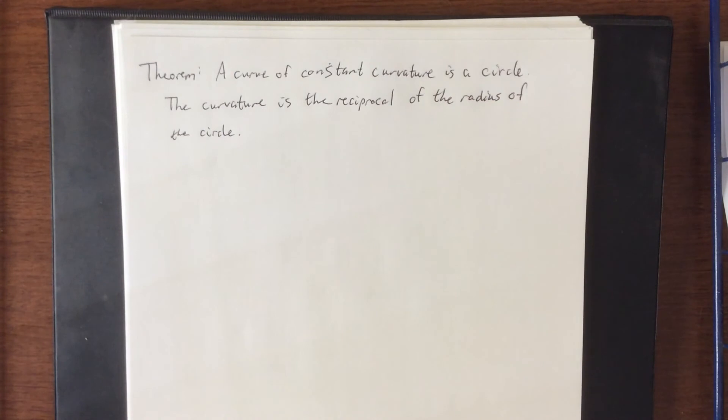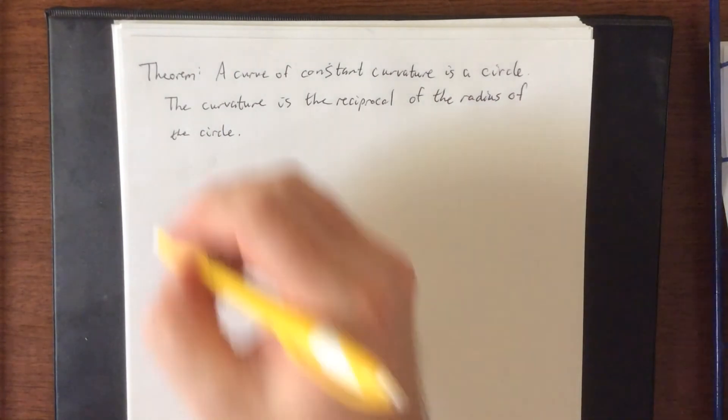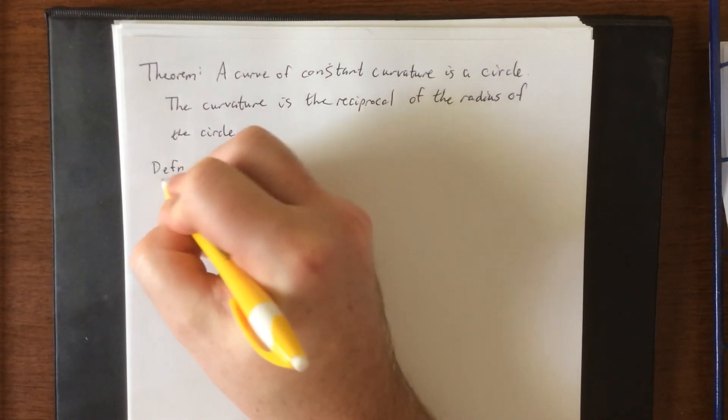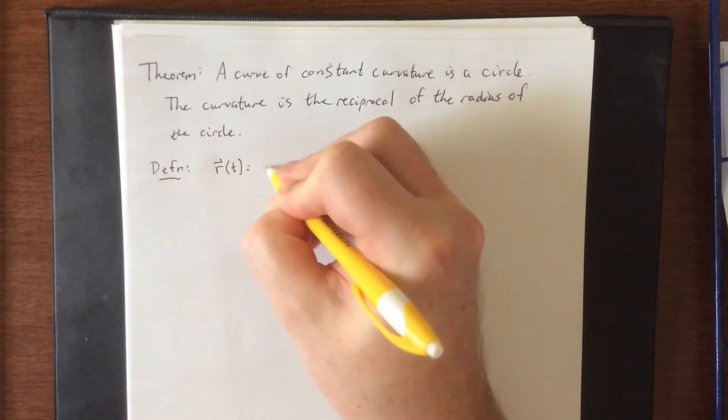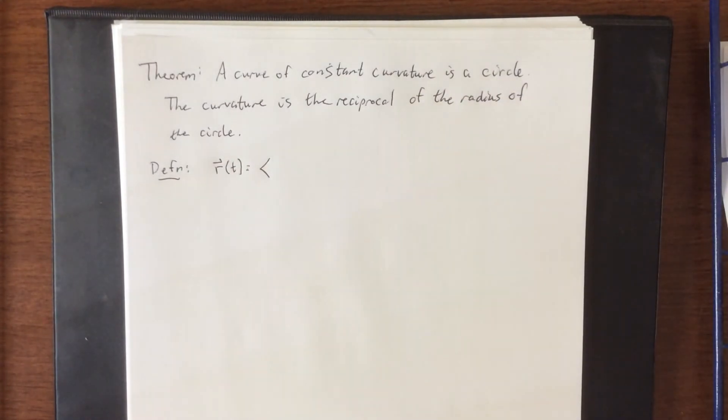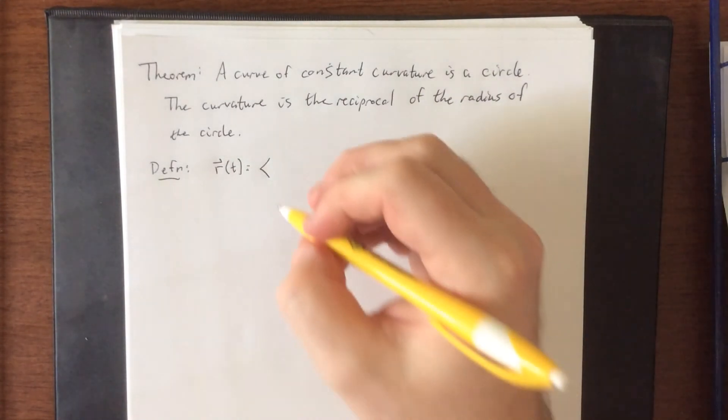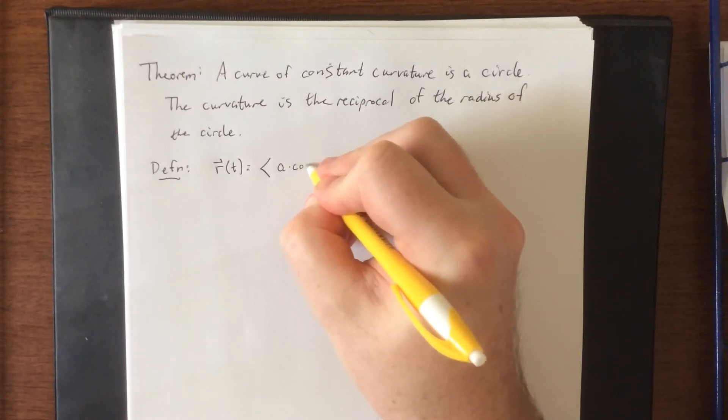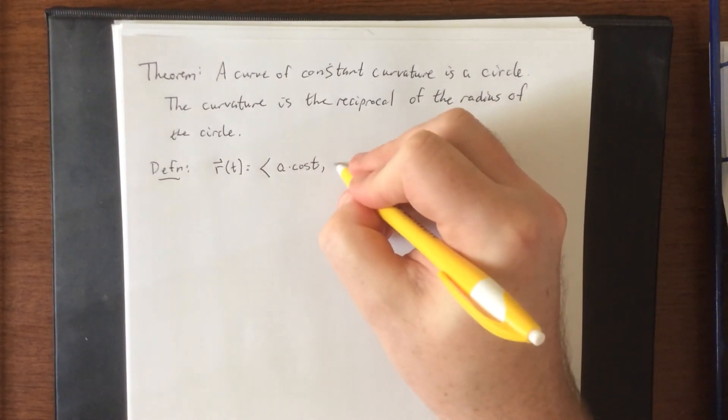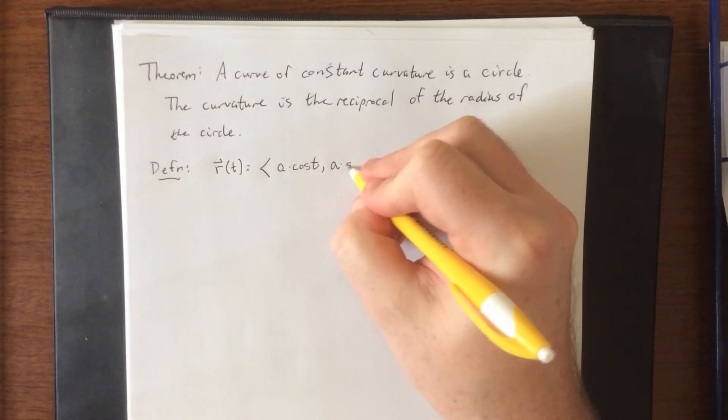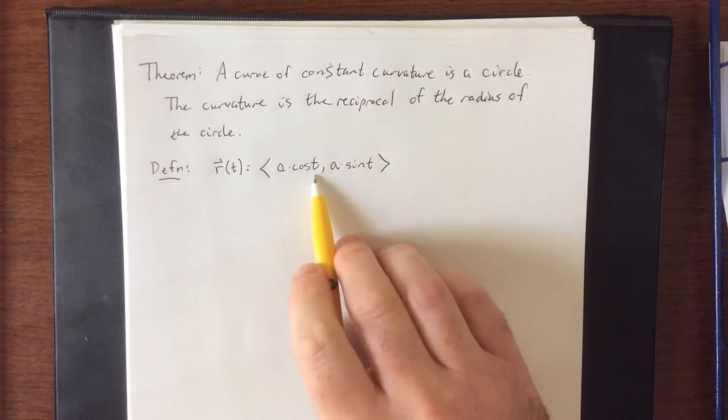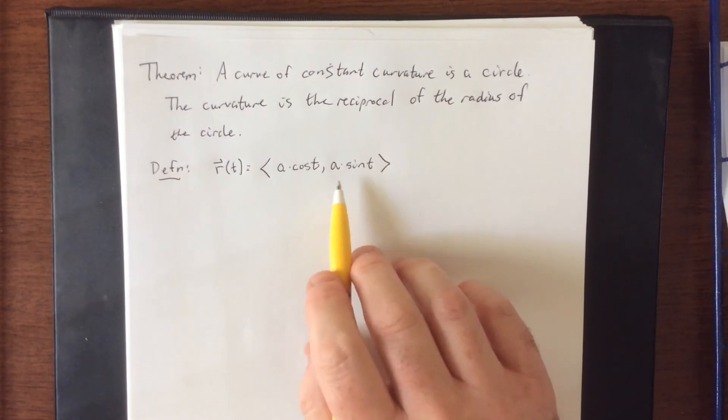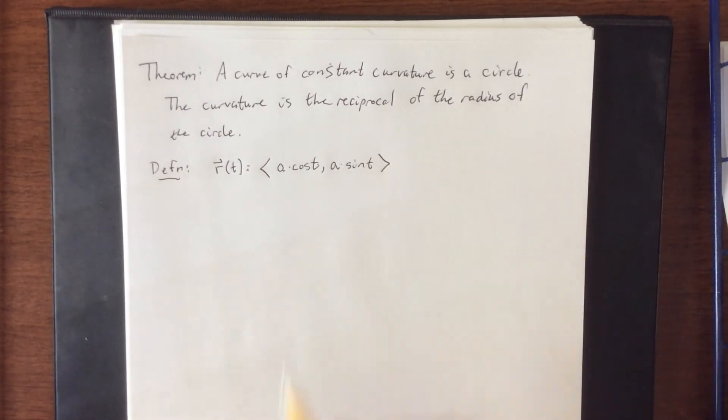In order for us to prove this, we're going to make use of the previous formula. First, we need to define a circle. I'm going to use the polar definition of a circle, where x is equal to r times the cosine of theta, and y is equal to r times the sine of theta. My parameter is going to be t, and my radius is going to be a. What we're going to show is that the curvature is 1 over a.